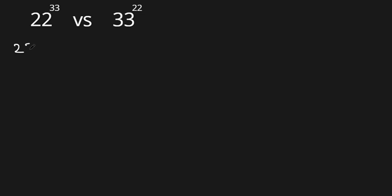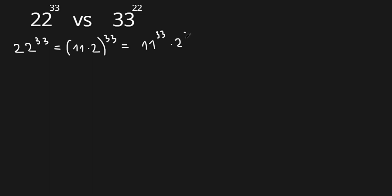Let's start with the first number: 22 to the power of 33. It can be written as 11 times 2, all raised to the power of 33. So now we have 11 to the power of 33, times 2 to the power of 33.